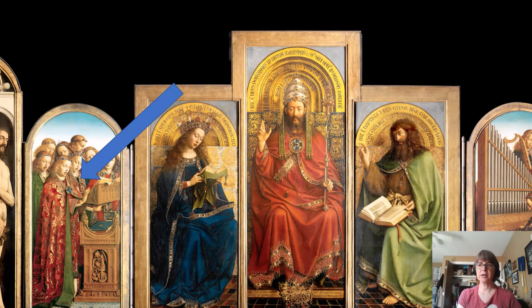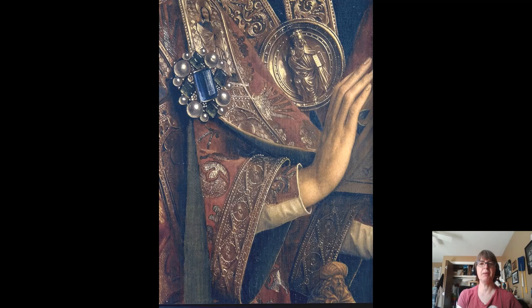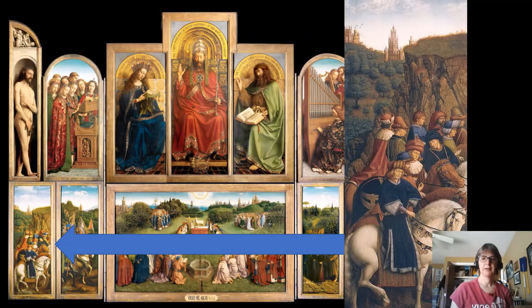On the panels on the left and right you have angels — on the left side a choir of angels, and on the right side angels playing musical instruments. Looking at a detail of the lead angel: just amazing craftsmanship, how incredibly realistic that looks. This is not a huge piece of art — each individual painting is not that big — and yet here you can see every thread of embroidery on that angel's robe.